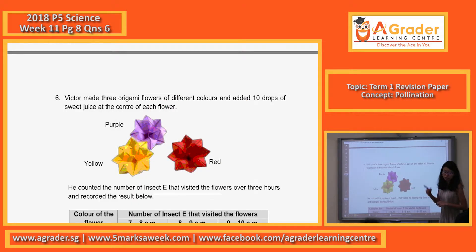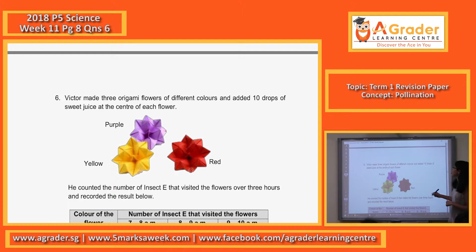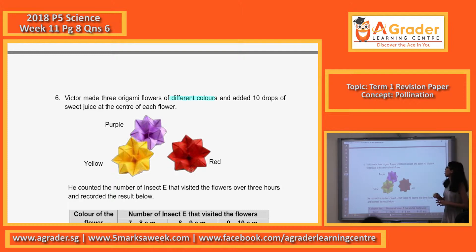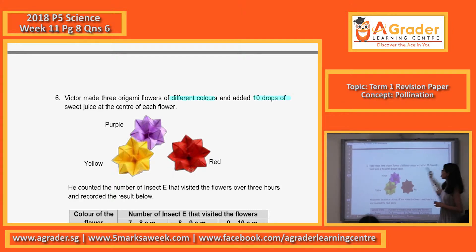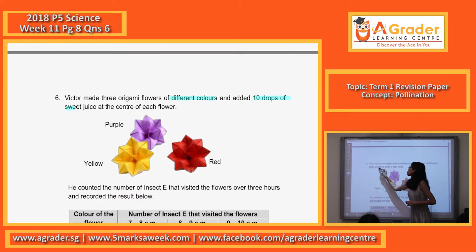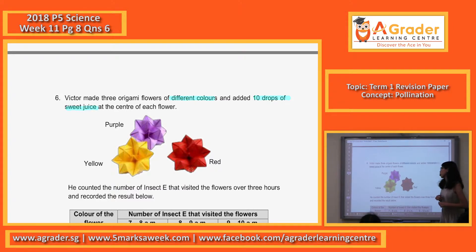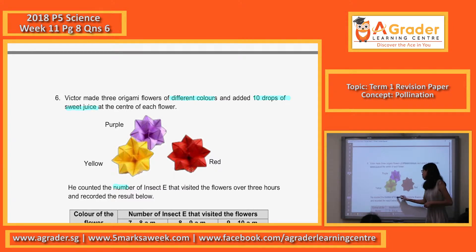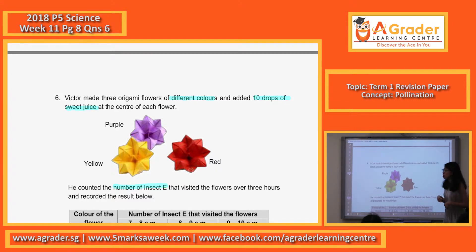Alright, now let's look at question 6. Victor made 3 origami flowers using different colours and added 10 drops of sweet juice at the centomish flower. He counted the number of insects that visited the flowers over 3 hours and recorded the results below.